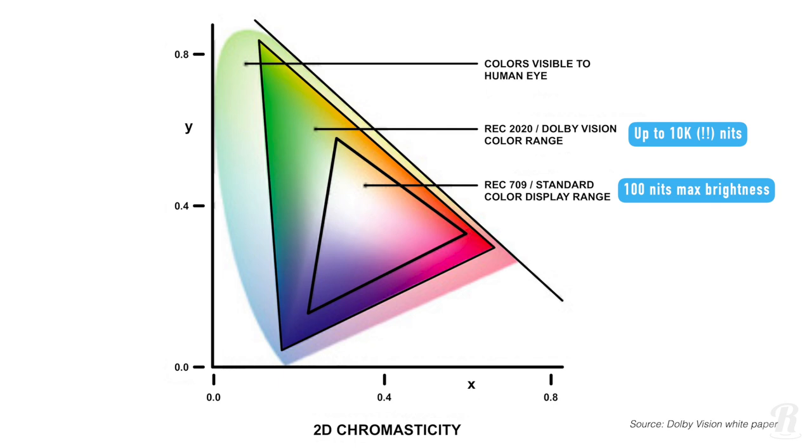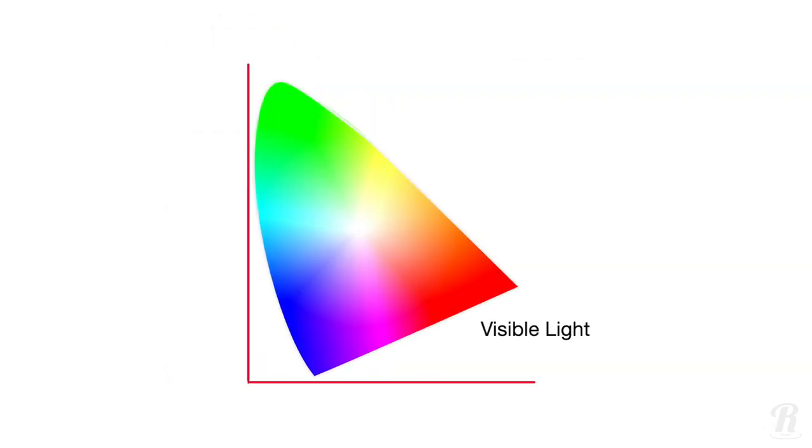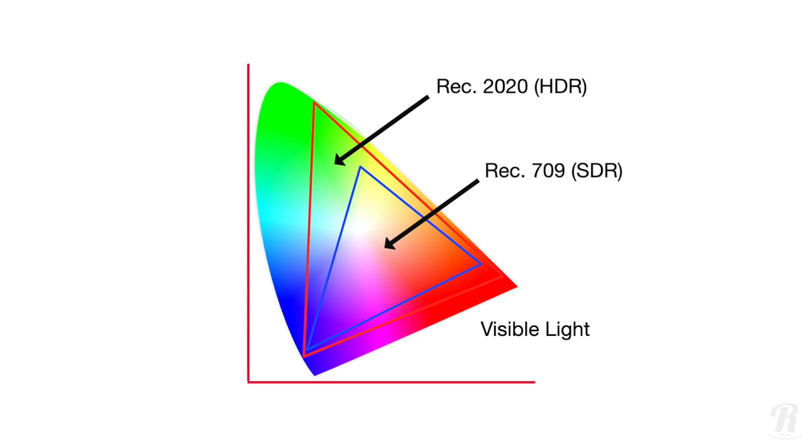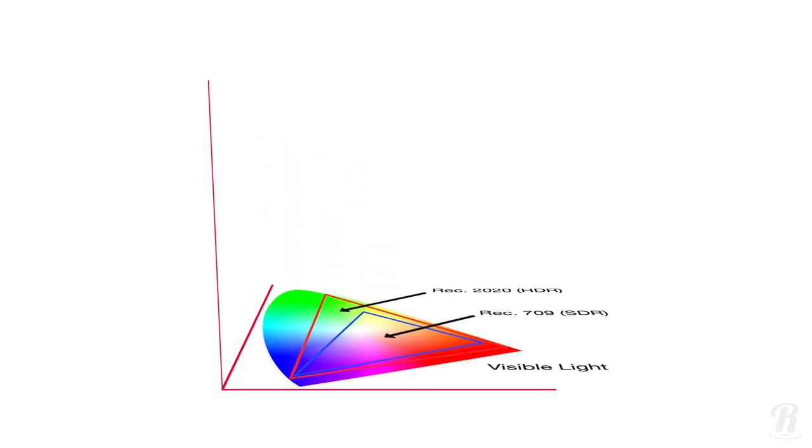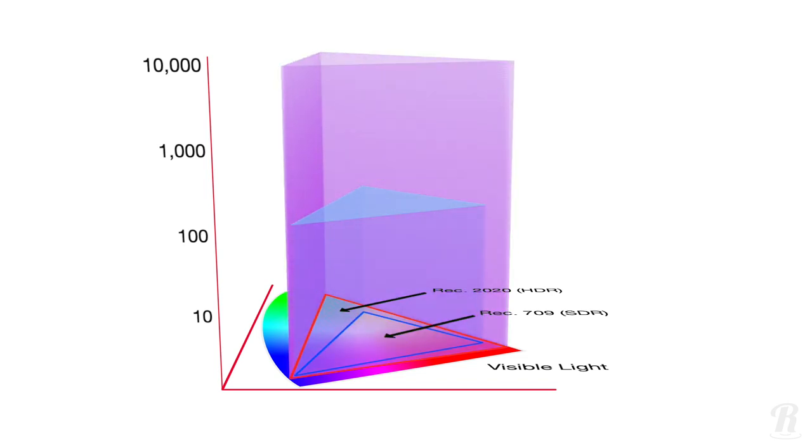Rec. 2020 is the delivery display color space for HDR, or High Dynamic Range, material. The main difference between HDR and SDR, in addition to being able to display more saturated hues, is that HDR can display more brightness values than SDR. This can be represented in a third axis extending out of the chart, like this.